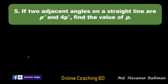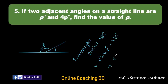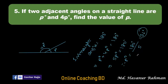Now number five: if two adjacent angles on a straight line are p and 4p degrees. If I draw this figure — suppose this is a straight line and there is another line, with one angle p degrees and the remaining part 4p degrees. We know that one straight angle means 180 degrees. So p plus 4p equals 5p degrees equal to 180 degrees. Therefore p equals 180 divided by 5, which is 36 degrees.